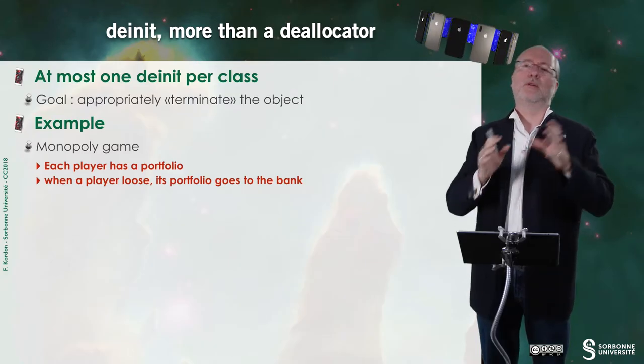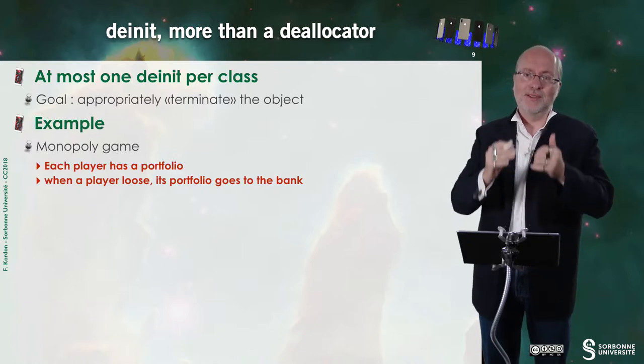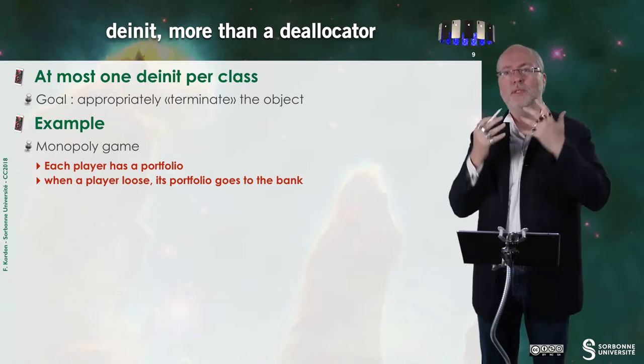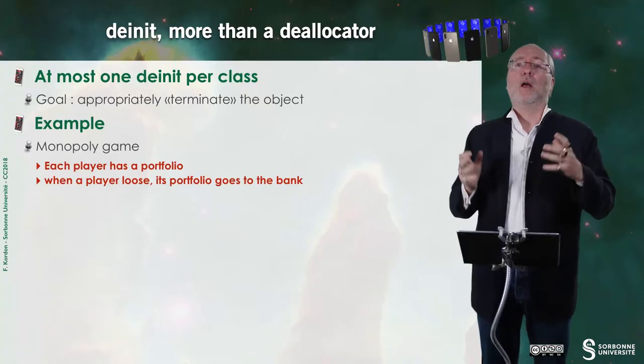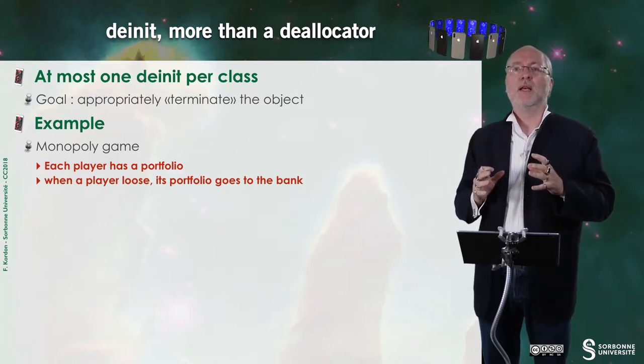deinit is more or less the equivalent of dealloc. As I mentioned, it would have been better in the deinit of the Person class to deallocate the name property by setting name to nil. In fact, deinit — there is just one deinit per class — is not only for deallocating memory. It's to appropriately terminate the object.